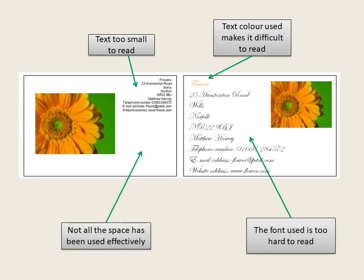Let's go through some of the negatives. The business card on the left hand side — the text is too small to read, and they've not used all of the space effectively. That's partly because the image has been over enlarged, and that's also meant that there's been quite a lot of white space left in the bottom right hand corner. The business card on the right — the text colours used makes it quite difficult to read. You can see that on the word 'flowers', and actually all of the font type that's been used makes it really hard to read any of the contact details.